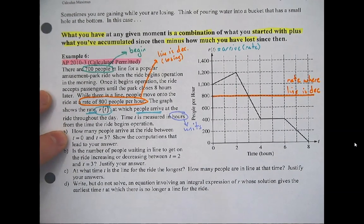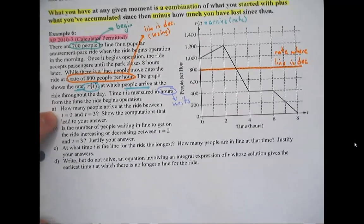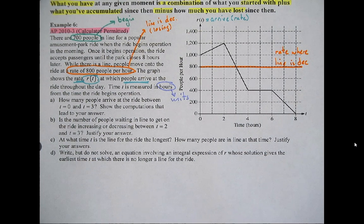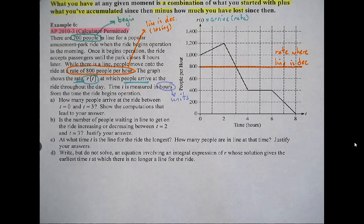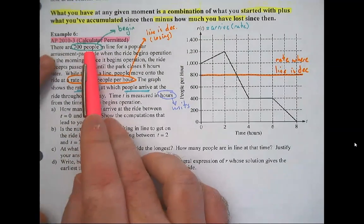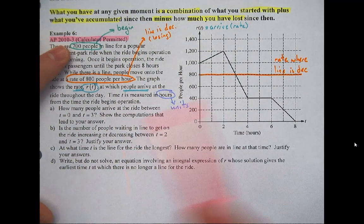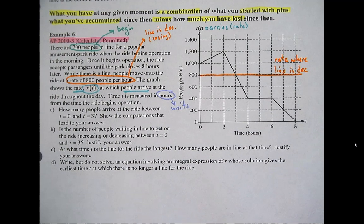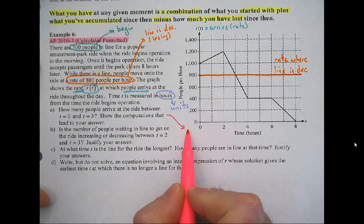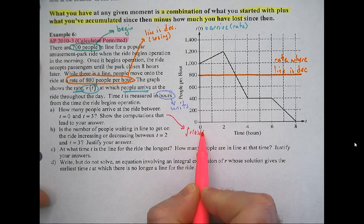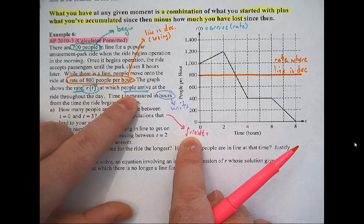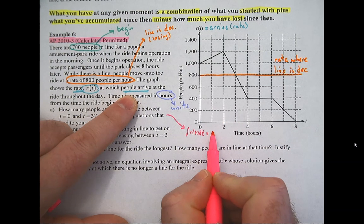Now we can finally start answering the question: how many people arrive at the ride between t=0 and t=3 hours? I would integrate r(t) from zero to three. Be careful — how many people arrive is not asking how many are in line, but how many have shown up since then. If I start at 700 and integrate, that tells me how many are in line, not how many arrive. When you integrate r(t) dt, r(t) is people per hour — a rate — times dt (hours), and the hours cancel, giving you number of people.